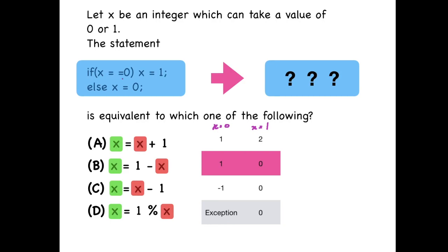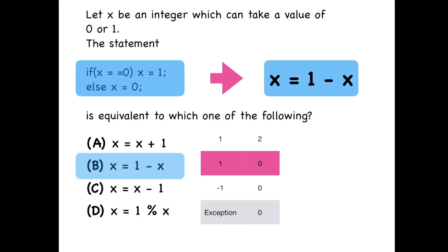So from the statement, if X is 0 then the new value will be 1, and if it was 1 then the new value will be 0. Now this condition is satisfied by only option B, so the answer is option B.